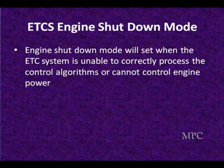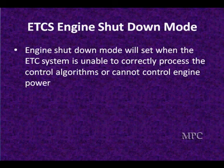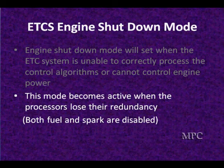The engine shutdown mode will set when the ETC is unable to correctly process the control algorithms and cannot control engine speed. When it requests a certain engine speed and cannot achieve it, it will shut the engine down. It is considered unsafe to operate an engine where the computer cannot control engine power — and there are legal concerns around this. This mode becomes active when the processor loses redundancy, and both fuel and spark are disabled. If you have a car with no fuel and no spark, make sure you don't have an ETC code shutting the whole thing down.